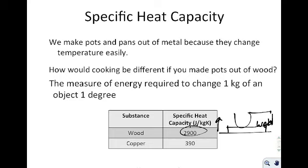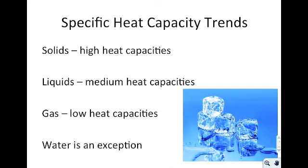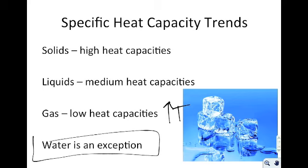Specific heat capacity is a measure of the energy required to change one kilogram of a material by one degree. Solids have incredibly high specific heat capacities — it's very difficult to change the temperature of a solid. Liquids tend to have medium specific heat capacities, and gases have extremely low specific heat capacities — it's incredibly easy to change the temperature of a gas. Water is again an exception, where the solid form has a lower specific heat than the liquid.